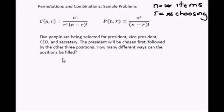This next question we have got 5 people being selected for President, Vice President, CEO and Secretary. The President will be chosen first followed by the 3 other positions. How many different ways can the positions be filled? Well we have been told that the President is going to be chosen first followed by the other 3 positions. So this is a permutations problem because the order does matter.